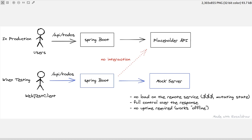This is Spring Boot specific, but the learnings from the series also apply to testing other Java projects using other frameworks. Here we will connect with the WebTestClient — a nice testing utility of Spring — to our started Spring Boot application. In the background it won't connect to the Placeholder API but use WireMock instead to fake responses and give us full control of the HTTP responses to test various scenarios.